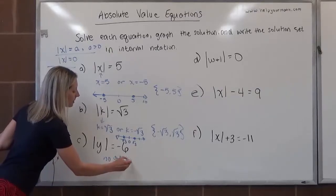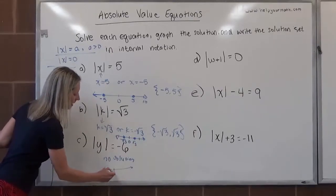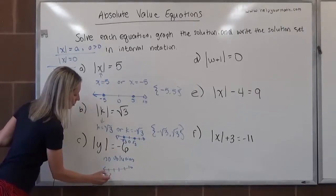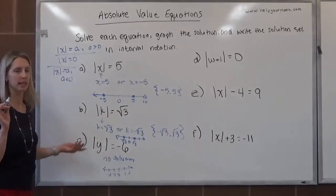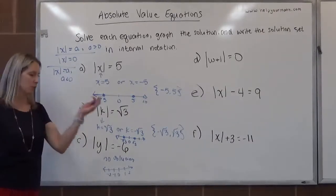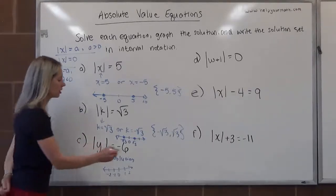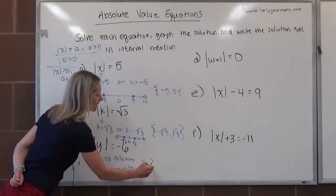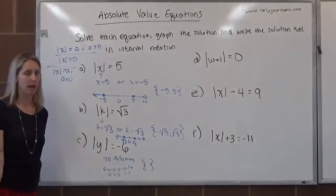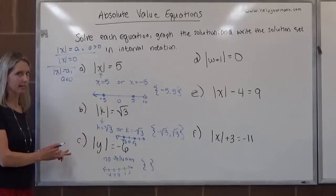If we're going to represent this on a number line, we can have a number line and put whatever numbers we like on it — negative 2, negative 1, 0, 1, 2 — and then we don't put any dots anywhere. There are no points that satisfy it, so it's just a number line with no extra points. In interval notation, you open up the braces and don't put anything inside, because there's no solution — just empty braces. That's how we represent the no solution case.